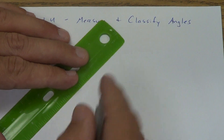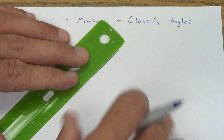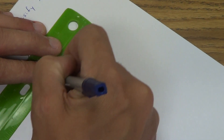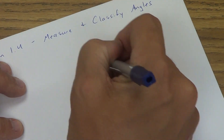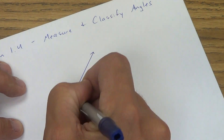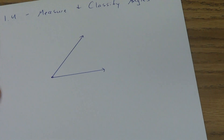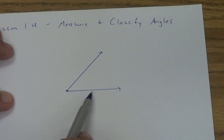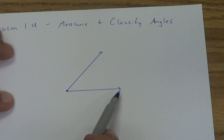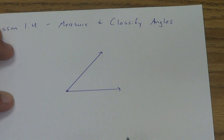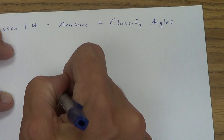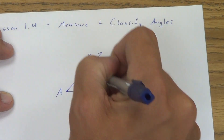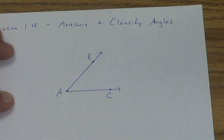So an angle, as I draw it here, is made up of two rays that begin at the same point. So here's our beginning point for both of the rays. One ray comes out here, keeps going. Another ray comes out here. I'll go ahead and give them some letters. We've got an A and a B and a C.